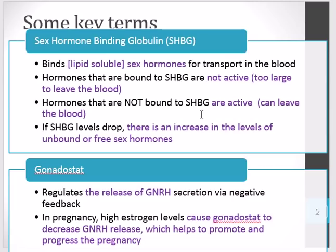Hormones not bound to SHBG are considered active because they can leave the blood and have their effect on target tissue. There is normally a regulated amount of SHBG. Certain conditions can cause SHBG levels to drop, which increases the level of free, active sex hormones in the blood, ultimately increasing the effect these sex hormones have on tissues.